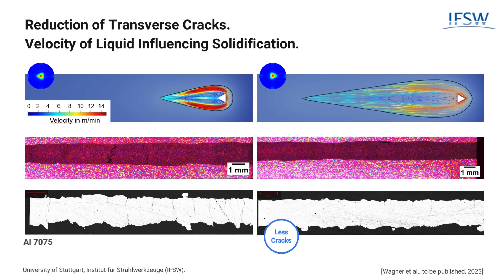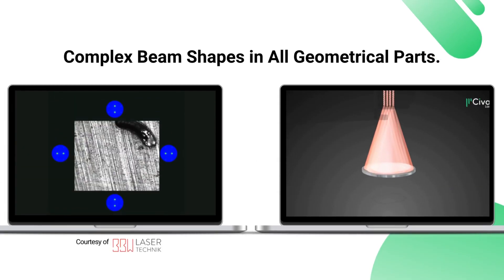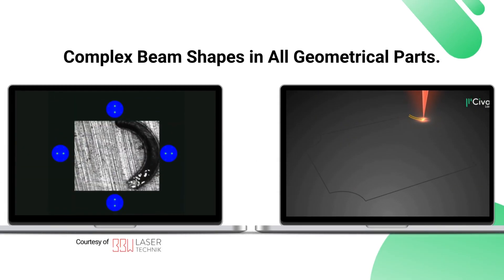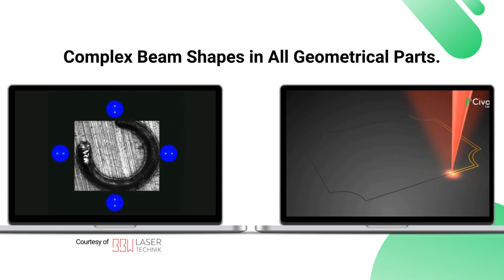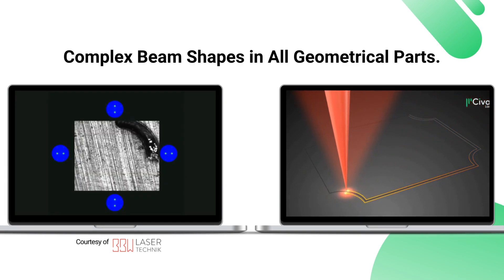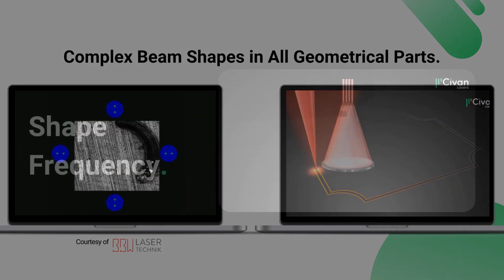Civan's Dynamic Beam Laser offers a significant advantage in changing the orientation of the beam shape, which opens opportunities for using non-symmetrical beam shapes.